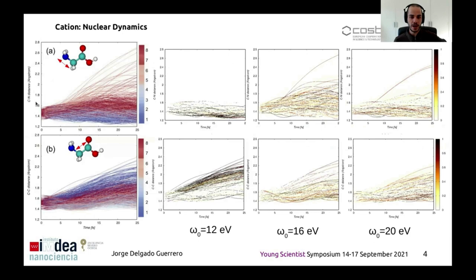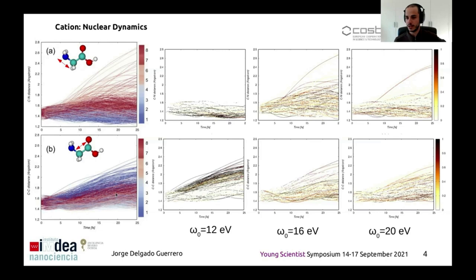If we start at a high cationic state, it is more probable to observe CN fragmentation, and if we start at lower cationic states, it is more probable to observe CC fragmentation. Testing whether this behaviour is preserved with different pulses: CN fragmentation is not favourable at all with a 12 eV pulse, where mainly low cationic states are populated — so CC fragmentation is more favourable. As we increase pulse energy, CC fragmentation becomes less favourable and CN fragmentation more favourable.